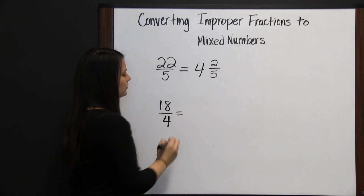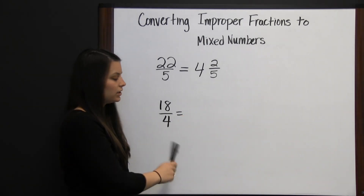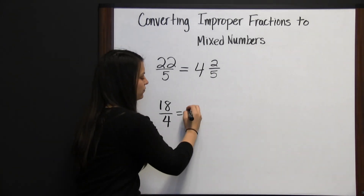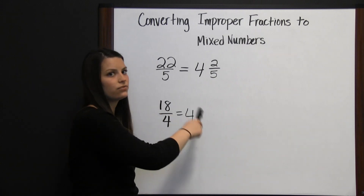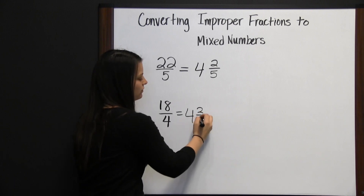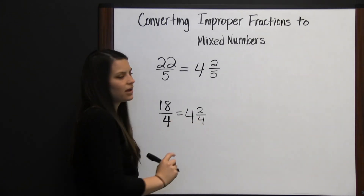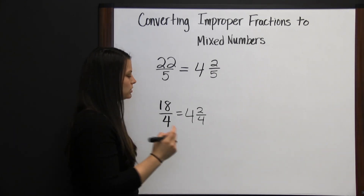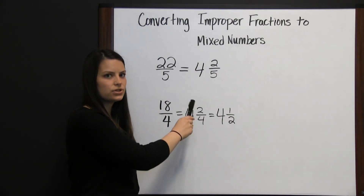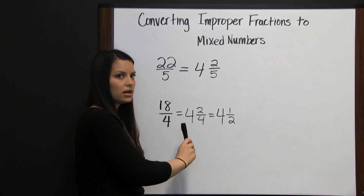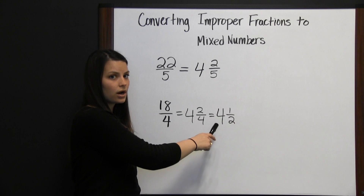Let's look at one more. To change an improper fraction to a mixed number, we divide our numerator by our denominator. 18 divided by 4 is 4. 4 times 4 is 16, so we have a remainder of 2. 4 goes into 18 four times with a remainder of 2 out of 4, since our denominator stays the same. This mixed number is special because we can simplify 2 fourths. So 4 and 2 fourths simplified would be 4 and 1 half, since the GCF of 2 and 4 is 2. 18 fourths as a mixed number is 4 and 1 half.